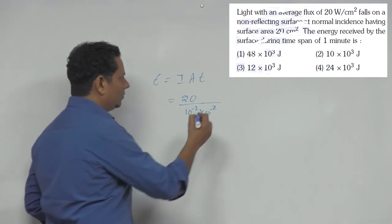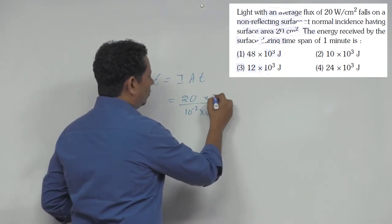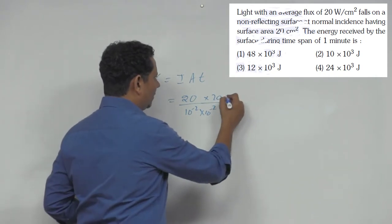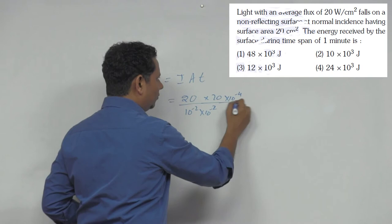The surface area that is given is 20 centimeter square. When we convert this, it becomes 10 to the power minus 4 meter square.